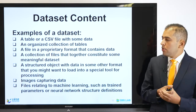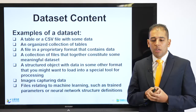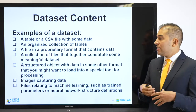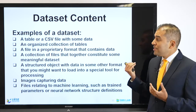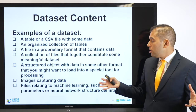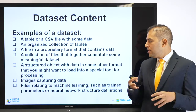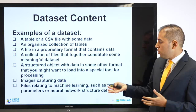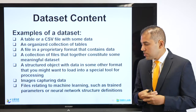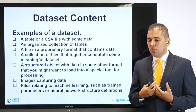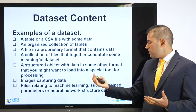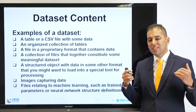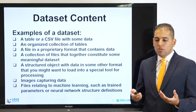Examples of datasets include a table in Excel in CSV format, an organized collection of tables, a file in a proprietary format that contains data, a collection of files in zip format, a structured object in some other format that you might load into a special tool for processing, images capturing data, or files related to machine learning such as trained parameters or neural network structure definitions. These are all examples of datasets you can share through publishing.